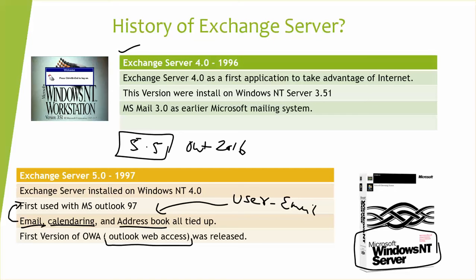Another feature is Outlook Web Access, which is a way to access your email through a browser when configured with Exchange. Outlook Web Access was first released with Exchange Server 5.0. It allows you to access emails through Internet Explorer or any other browser by typing the Outlook Web Access address, then entering your username and password to log in, send and receive emails, schedule meetings, and look up user accounts.